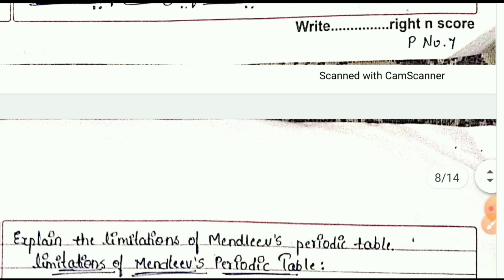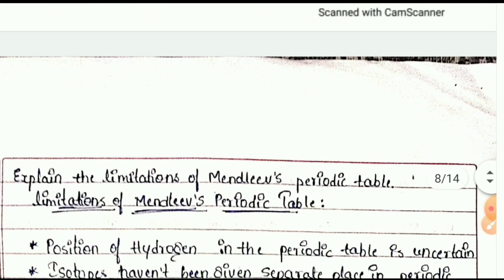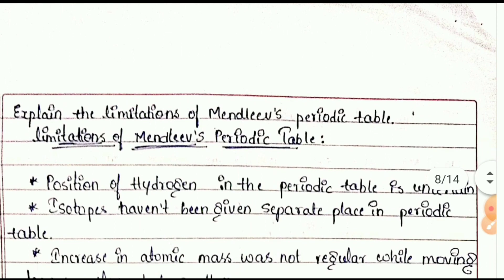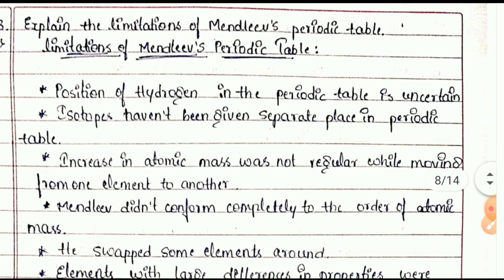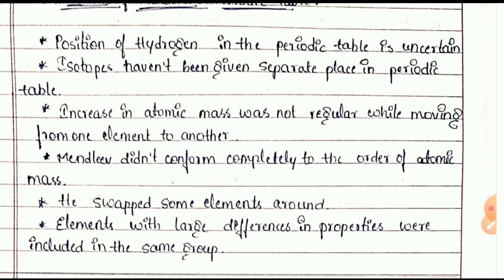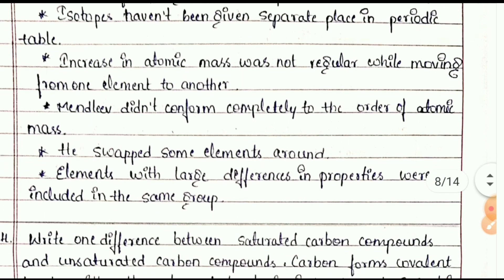Questions 23 to 25 are three-mark questions. Explain the limitations of Mendeleev's periodic table: the position of hydrogen was not fixed, isotopes were not given separate places, the increase in atomic mass was not regular, and Mendeleev didn't completely follow the order of atomic mass.